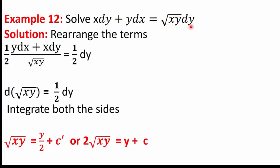In question 12, we solve X dY + Y dX = √(XY) dY. Rearranging and multiplying both sides by ½: ½(X dY + Y dX)/√(XY) = ½ dY. Taking XY = T, d(T^½) = ½ · (1/√T) · dT = ½(X dY + Y dX)/√(XY). So we get d(√(XY)) = ½ dY. Integrating: √(XY) = Y/2 + C′, or 2√(XY) = Y + C.